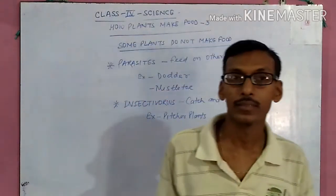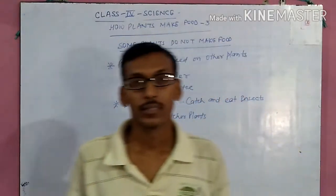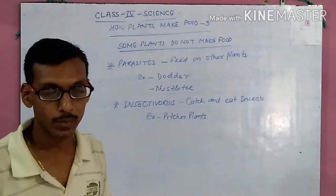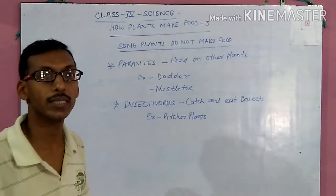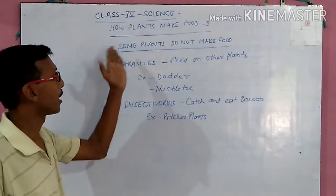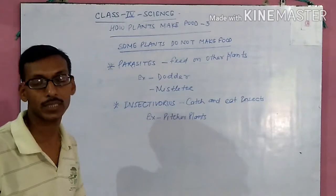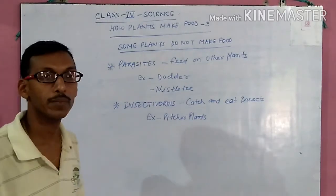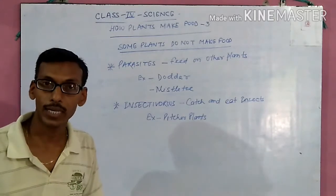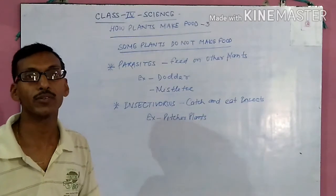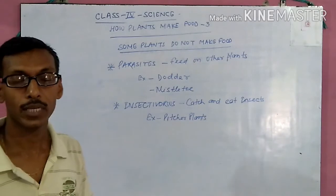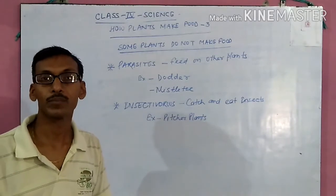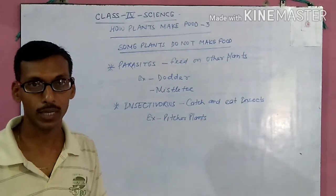Good morning children. This is the last part of Class 4, the last part. We are learning about how plants make food — the third chapter in science. In the previous lecture, we studied that food is necessary for every organism, and plants prepare their food with the help of sunlight, chlorophyll, carbon dioxide, and water.